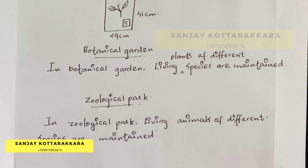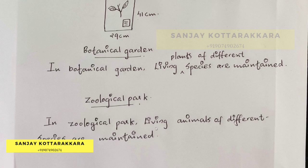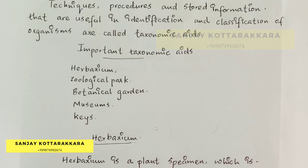In our board exam, we will study these topics. So we will study herbarium, zoological park, botanical garden, museums, and keys. These are the five taxonomical aids we need to know for the exam.